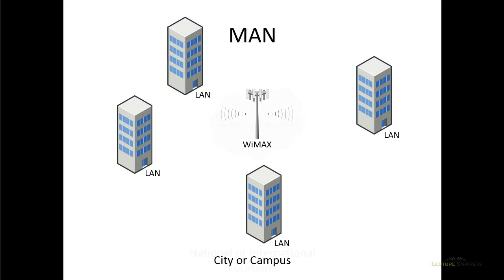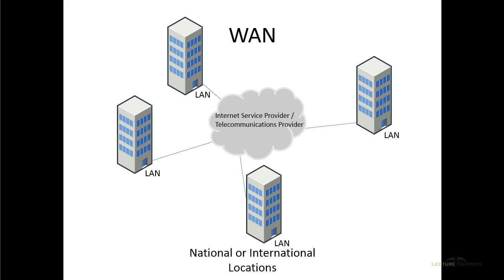Now let's go to WANs. WANs are very similar to MANs — the big difference is that instead of being within a city, we're looking at connecting offices that are either national or in different geographical areas, maybe even international. We're still going to be making these same connections, using a third party company most likely, and using different technologies to make connections to our buildings so that we can share data between all of our offices.